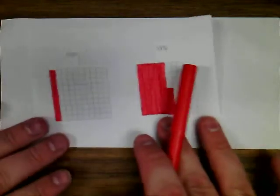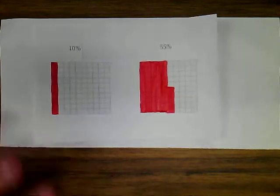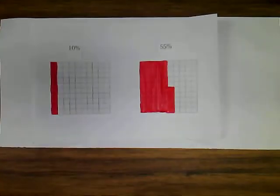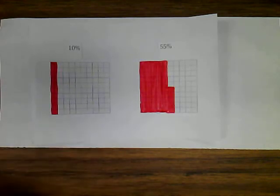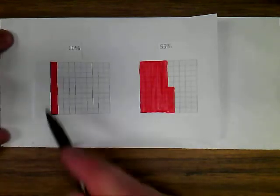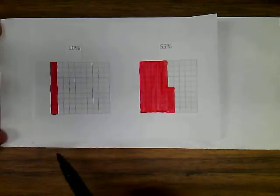Percents can easily be used in an array to show what the fractions represent. And so you can see in these arrays, the fraction 10% is shown by shading in 10 of the 100 squares in the array, and the percent 55% can be shown by shading in 55 of the squares.